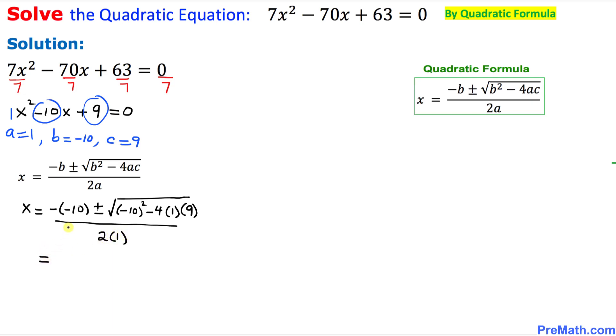Let's simplify furthermore. Negative and negative is going to become positive 10 plus or minus negative 10 squared is going to be 100, minus 9 times 4 is 36, divided by 2 times 1 is 2. So that is going to give us 10 plus or minus, this becomes 64, the square root of 64 divided by 2.